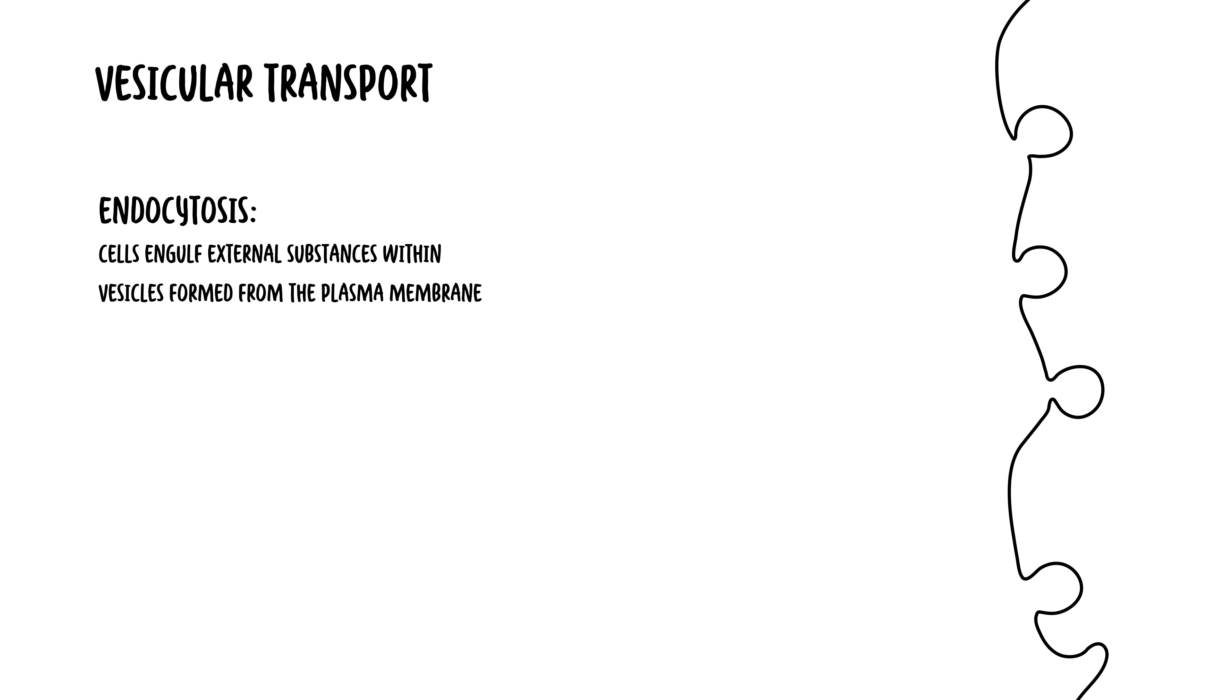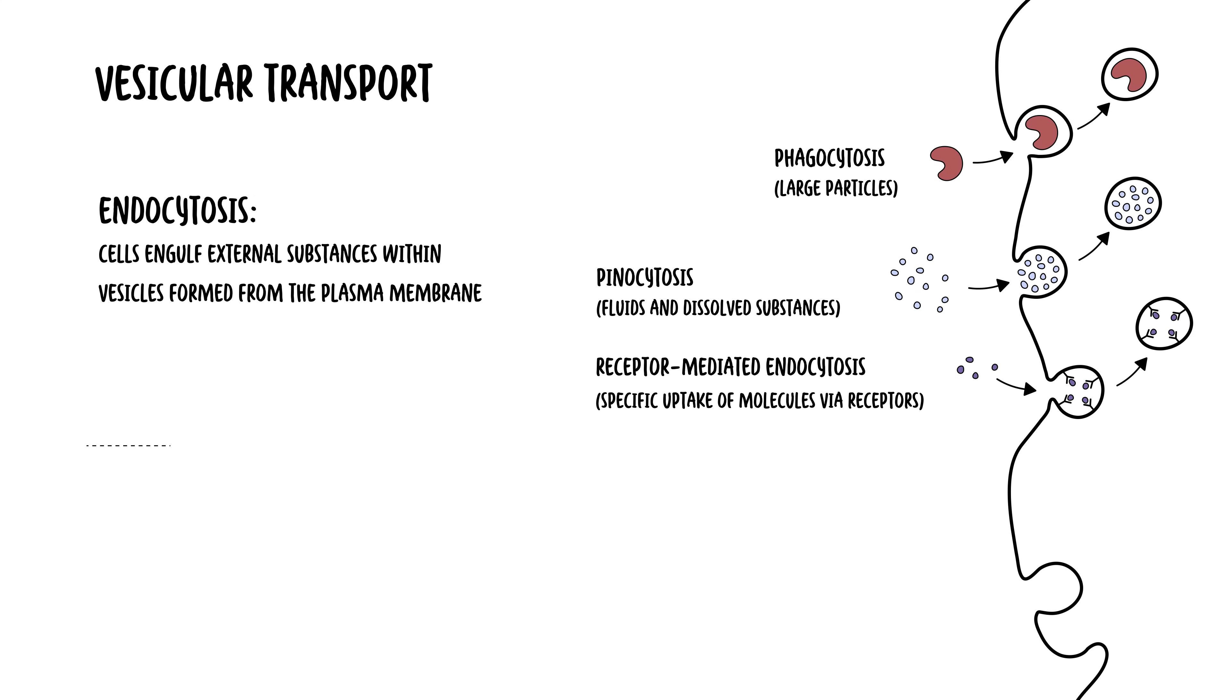Aside from passive and active transport, you also have another type of transport called vesicular transport, which includes endocytosis and exocytosis. Endocytosis is essentially the process by which cells engulf external substances within vesicles formed from the plasma membrane. This includes phagocytosis, ingestion of large particles, pinocytosis, ingestion of fluids and dissolved substances, and receptor-mediated endocytosis, where you have specific uptake of molecules via receptors.